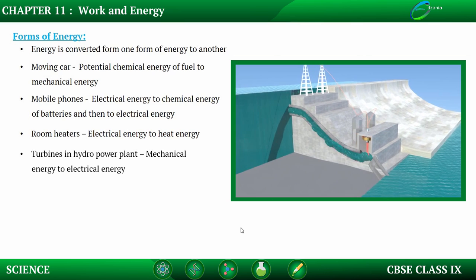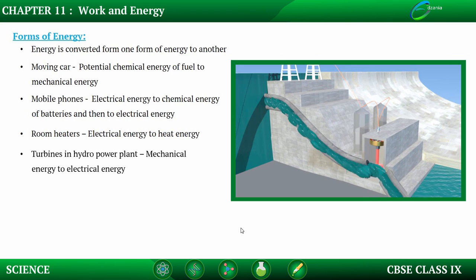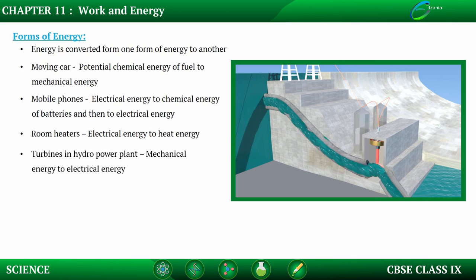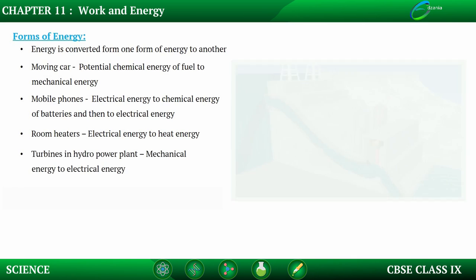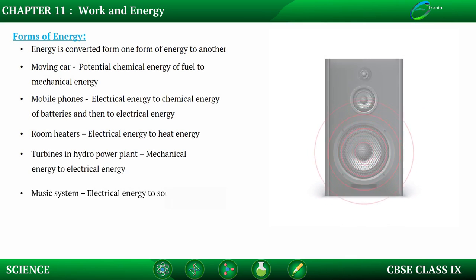In hydropower plants, kinetic energy is first converted into mechanical energy. The flowing water coming from the top turns the turbine — that becomes mechanical energy. Then the generator converts this mechanical energy into electrical energy. So you can see the energy is just changing form from one to another, not being destroyed. A music system is another example where we can see the change in form of energy — electrical energy is converted into sound energy.